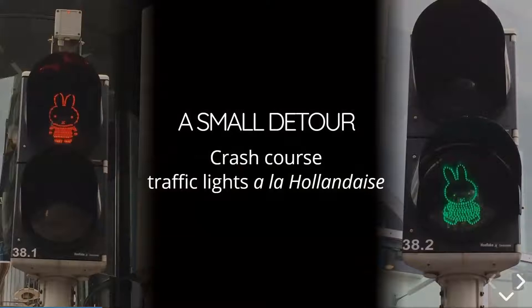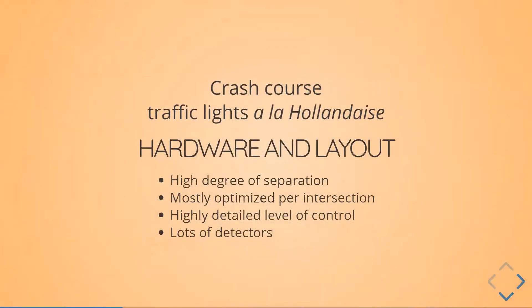Before I continue with the part about time loss, I want to make a small detour — a crash course of traffic lights à la Hollandaise — because it's a pretty specific way to handle traffic lights. In terms of hardware and layout, there's a high degree of separation, especially compared to Vienna, where a lot of intersections just alternate between two phases. In the Netherlands, left turns are often separated, right turns are sometimes separated, and cyclists almost always have their own phases. It's mostly optimized for intersections, with a high level of detail of control and a lot of detection.